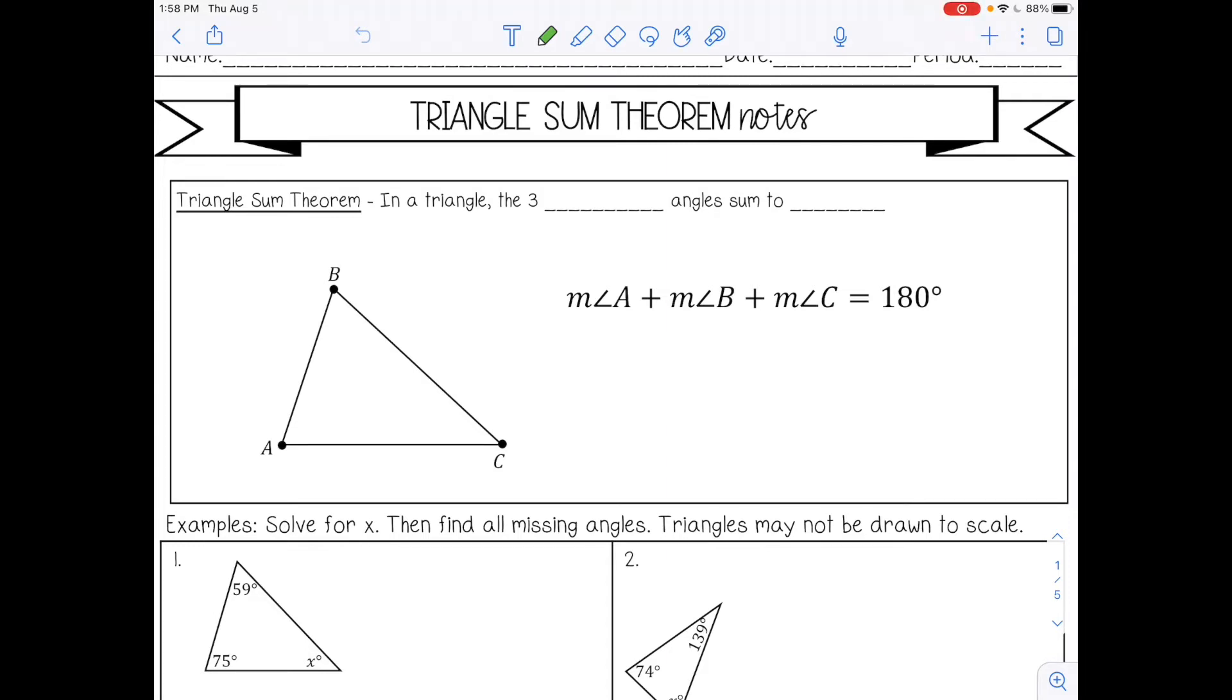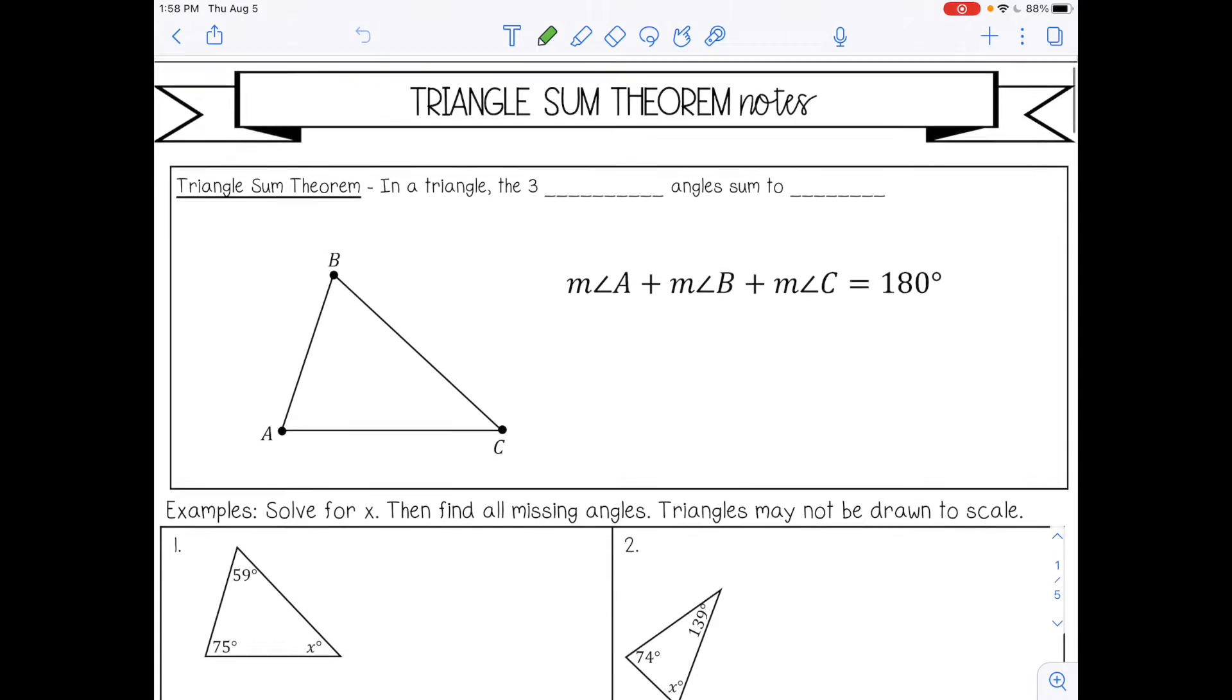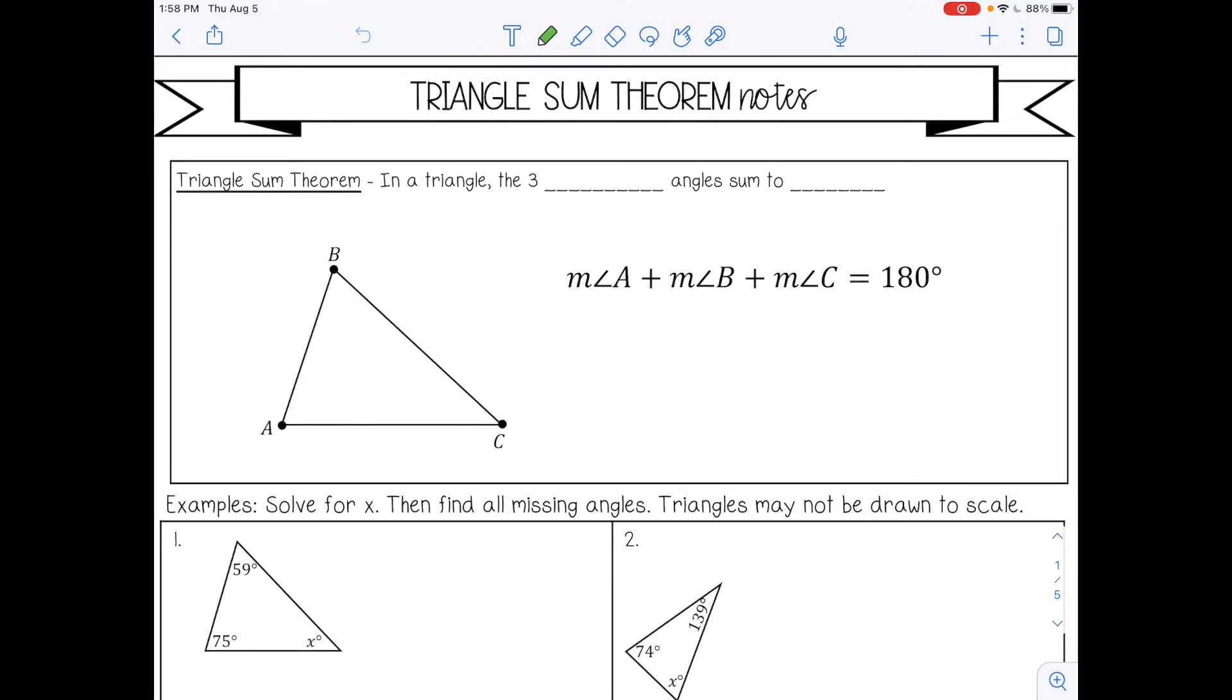Welcome to this lesson on the triangle sum theorem. The triangle sum theorem says in a triangle, the three interior angles sum to 180 degrees. Interior, remember, means inside. So the three angles inside a triangle will all add up to equal 180.